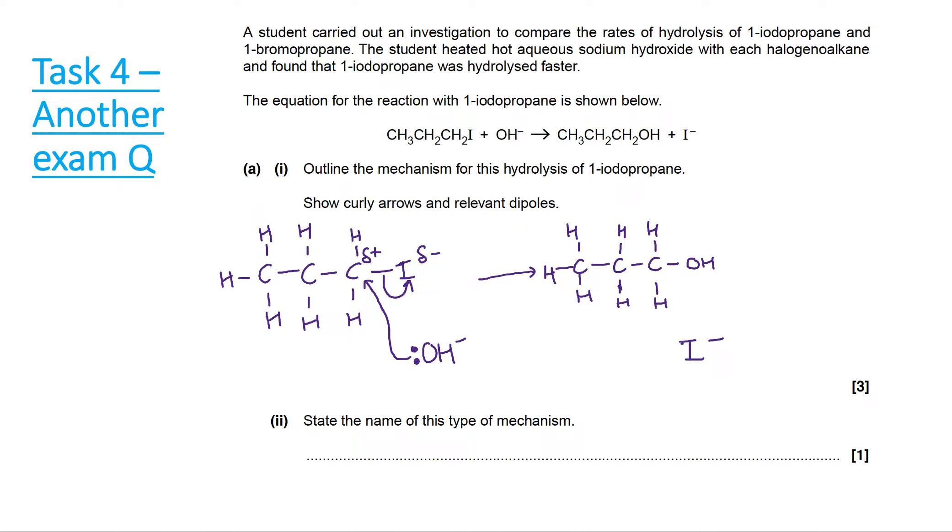The other product, as always, is the halide ion that you've kicked out, in this case I minus. The name of this type of mechanism: we've got OH minus coming in and substituting the iodide ion, so this is a substitution reaction. Because we've got a nucleophile, this is called nucleophilic substitution.